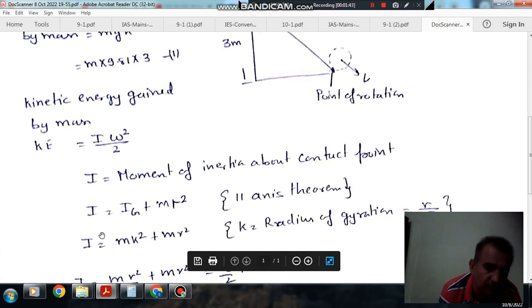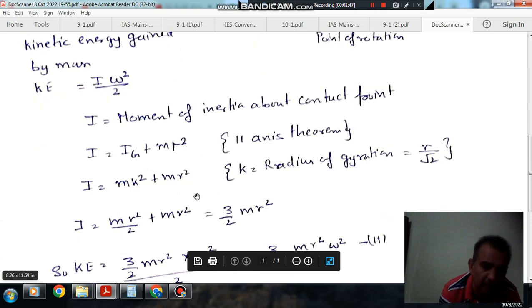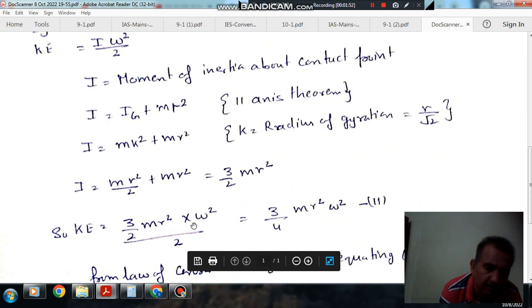So I equals mr squared over 2 plus mr squared. The energy equation becomes 2 mr squared omega squared over 2, or 3/4 mr squared omega squared.